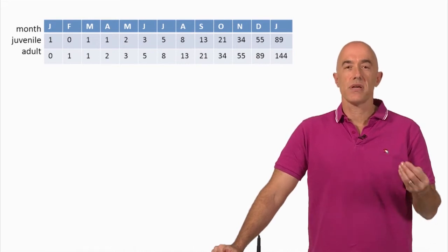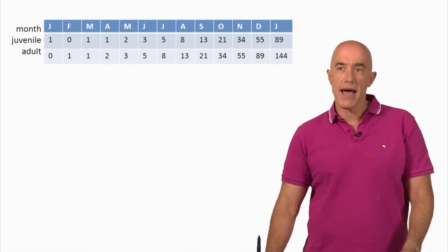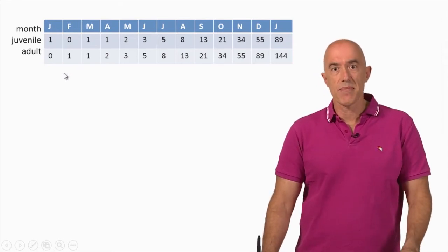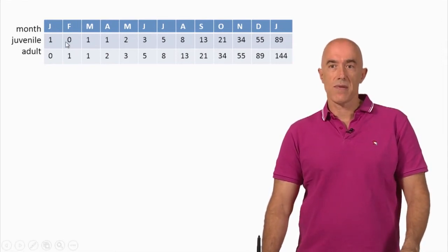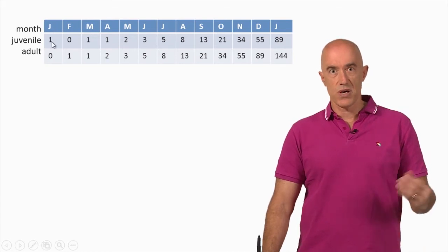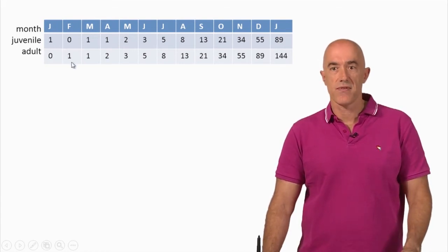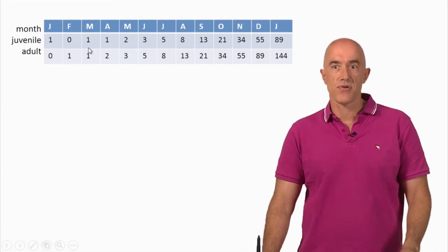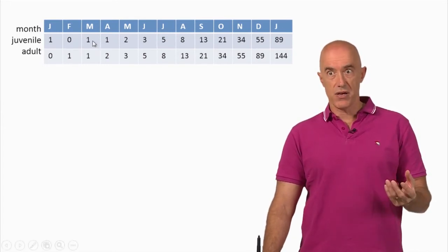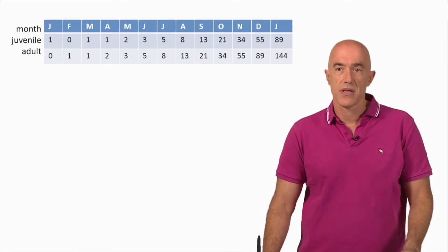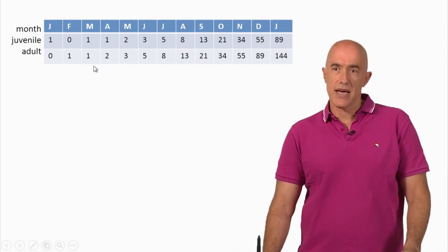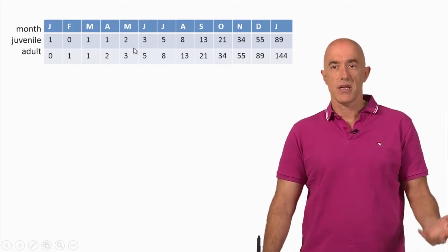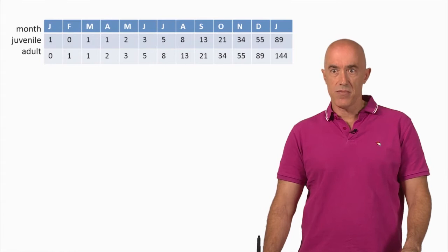So how do we introduce the Q matrix? Let's go back to this table of Fibonacci rabbit pairs. Remember, in the first month we introduced one juvenile, then we have an adult in the second month. The adult gives birth to a new juvenile pair in the third month and so on. We can look at the growth of the adults and the juveniles in this table.